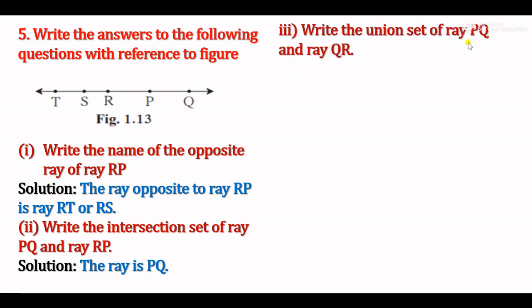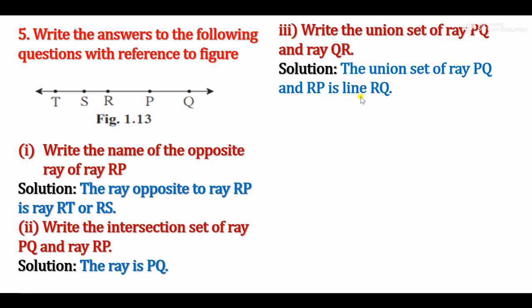Sub-question 3: Write the union set of ray PQ and ray QR. The union of ray PQ and ray QR forms a line. The solution is: the union set of ray PQ and ray QR is line RQ. You can also name it line RP or any name using two points on that line — here we use line RQ.